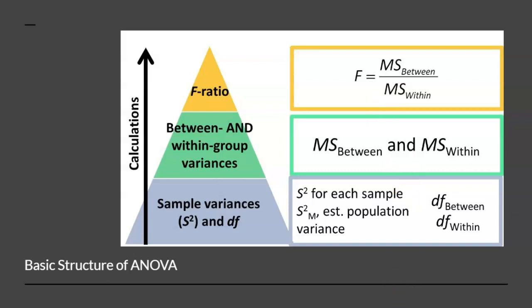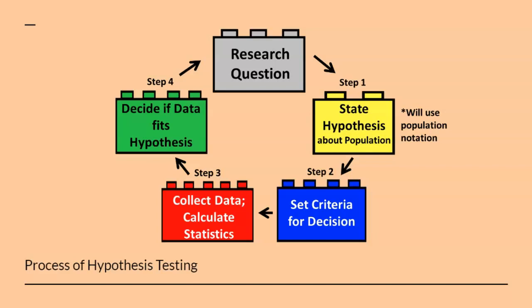There are at least five new formulas for calculating a one-way ANOVA. With this brief review of the structure of ANOVA, let's get started. This diagram illustrates the process of hypothesis testing. We will use the same four steps in conducting a hypothesis test with one-way ANOVA, with some modifications along the way.